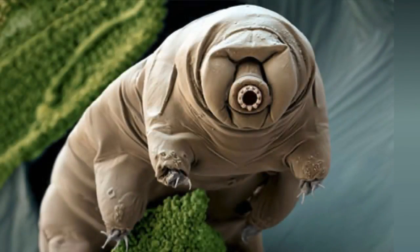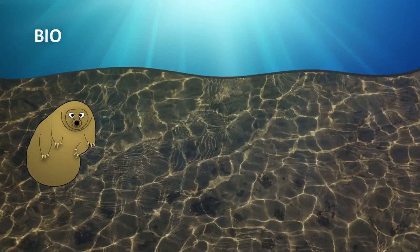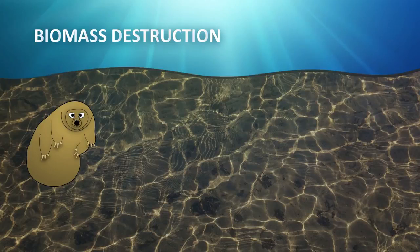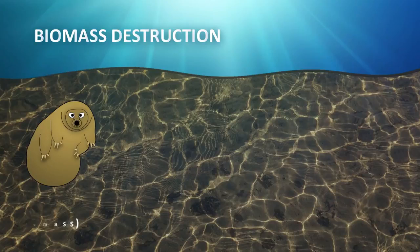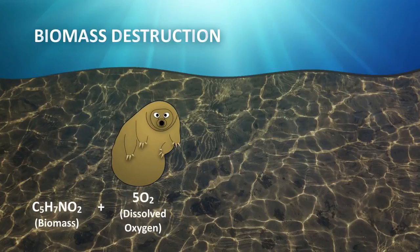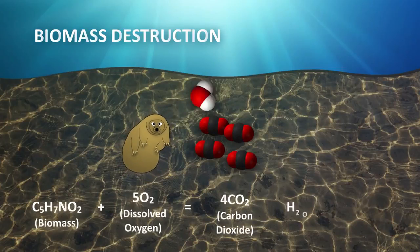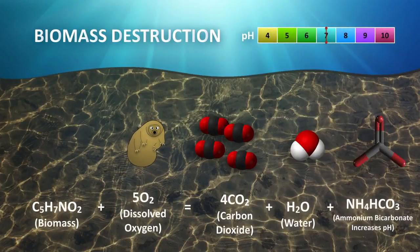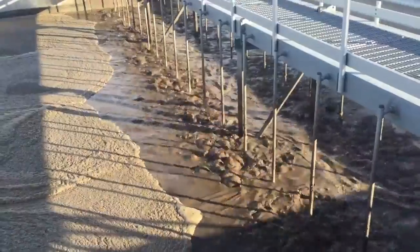The first biological process in an aerobic digestion system is biomass destruction. In biomass destruction, food supply is depleted, so microorganisms consume their own protoplasm to obtain energy for cell maintenance reactions. This reaction is described in the following chemical equation. The biomass requires 5 moles of oxygen in order to oxidize its own protoplasm. When the protoplasm is oxidized, it is reduced to carbon dioxide, water, and ammonium bicarbonate. This reaction describes how volatile solids reduction occurs in an aerobic digestion system.